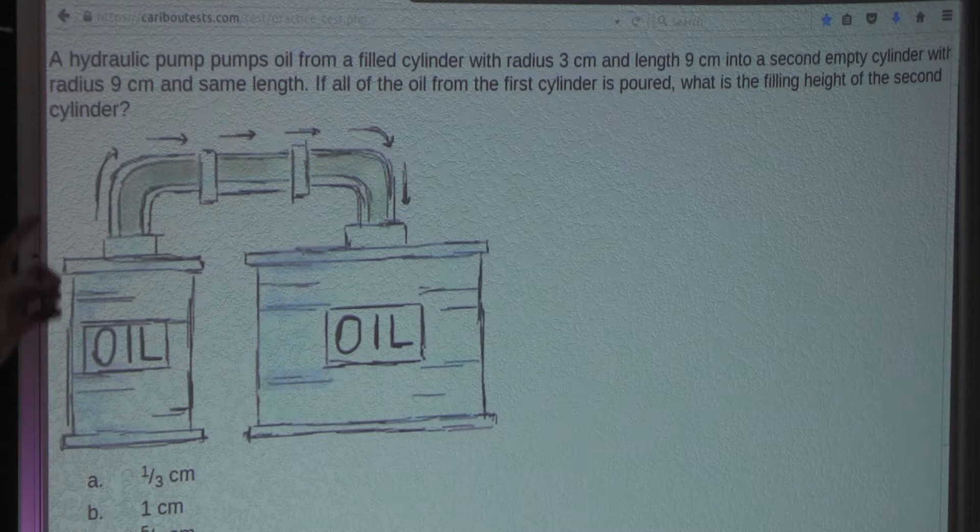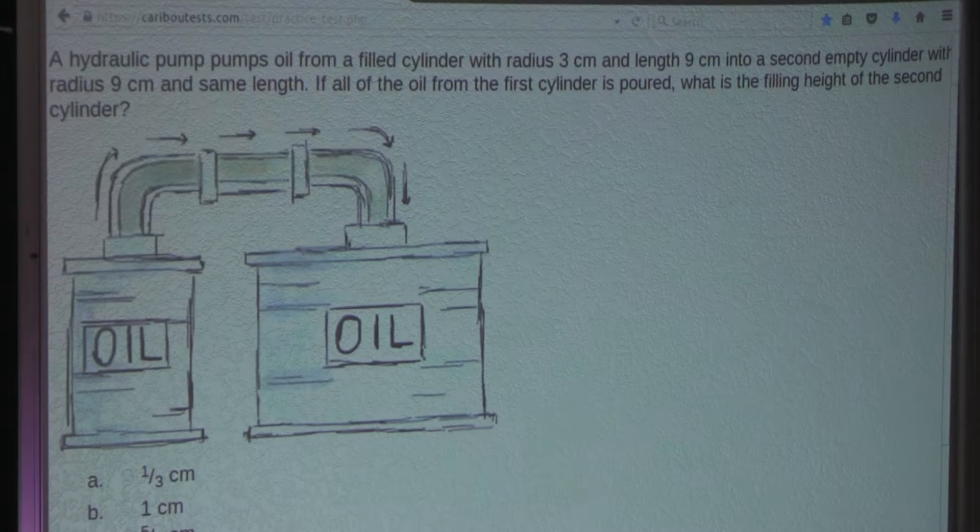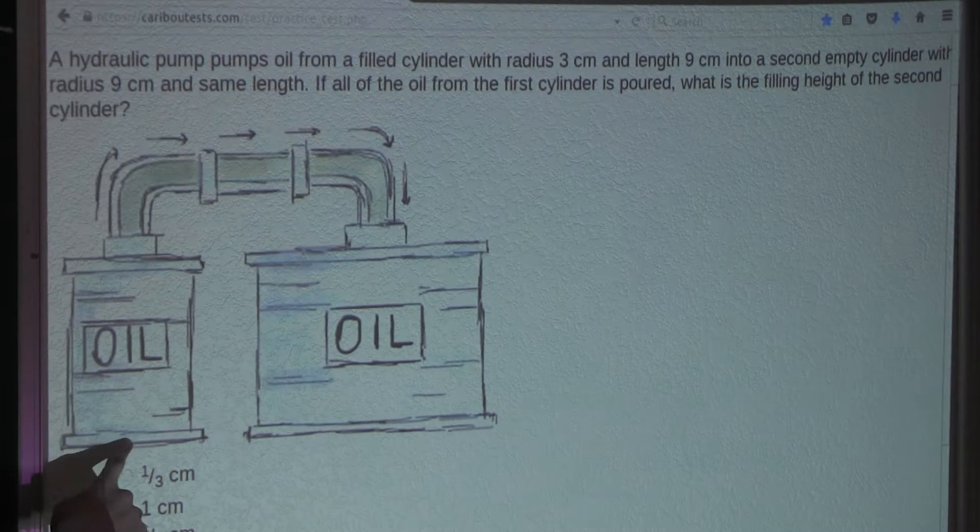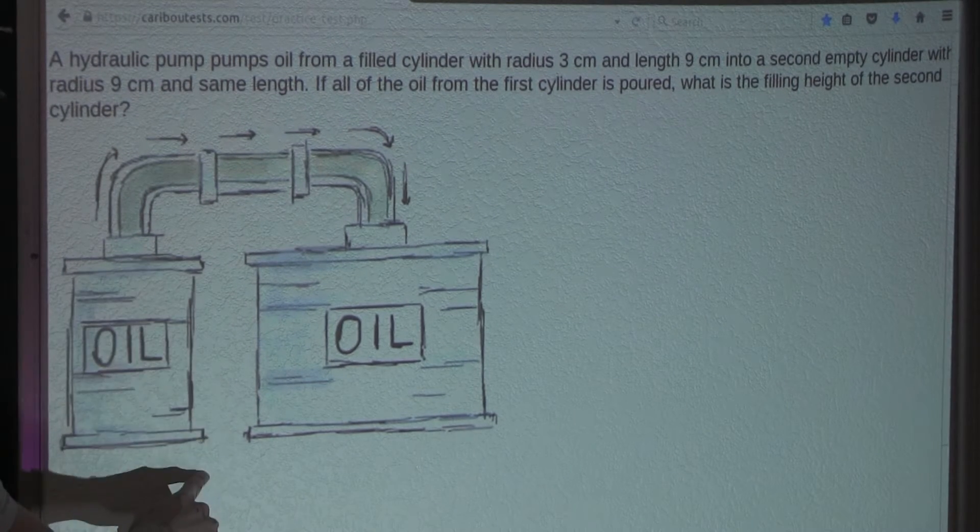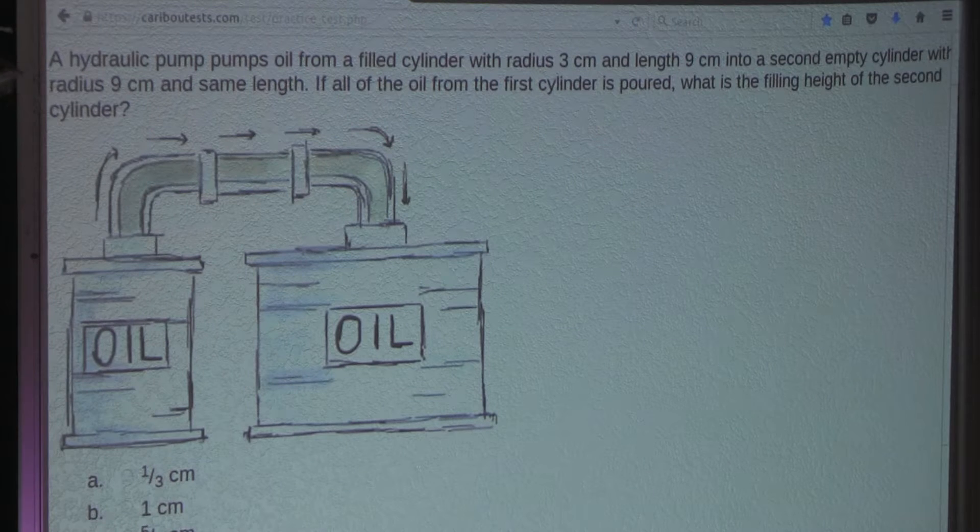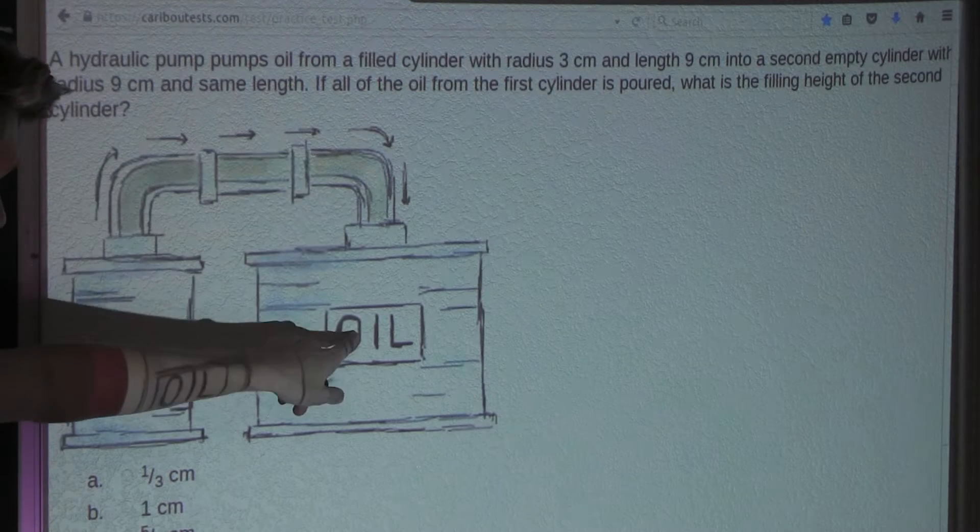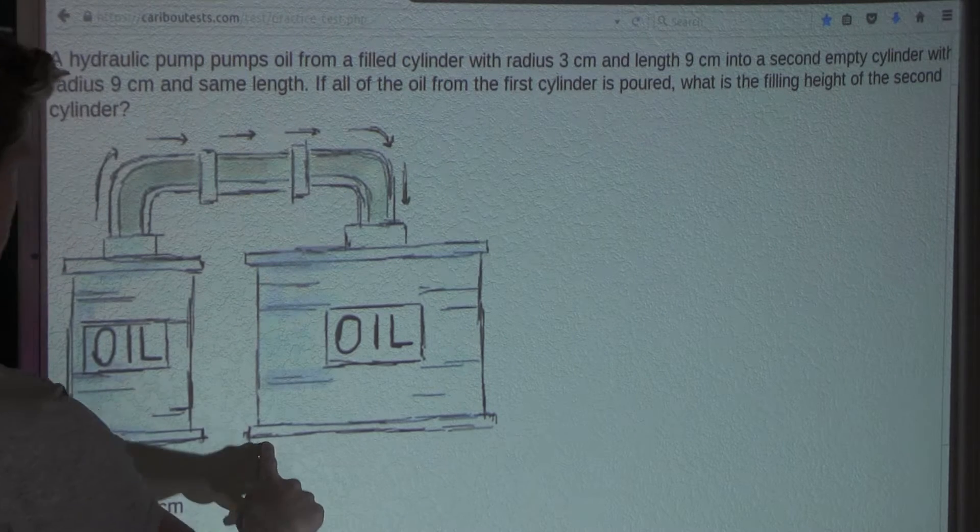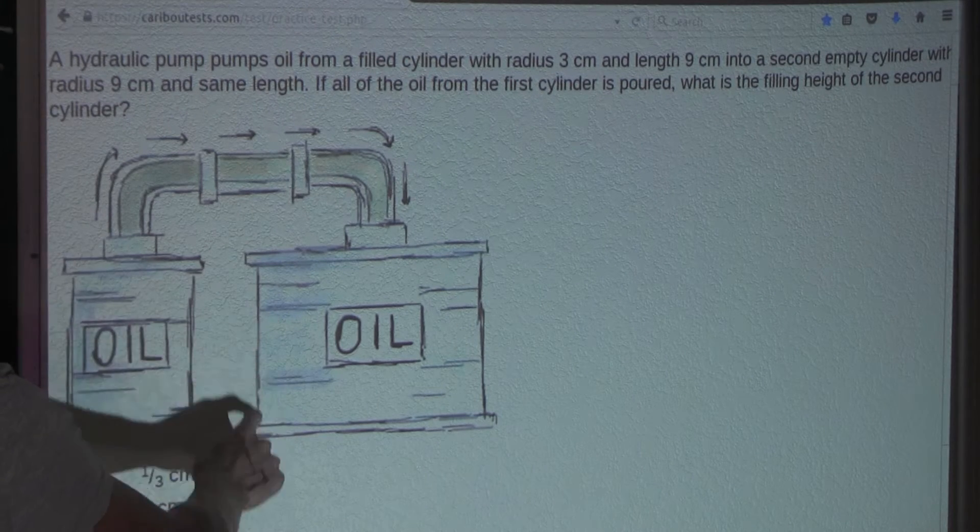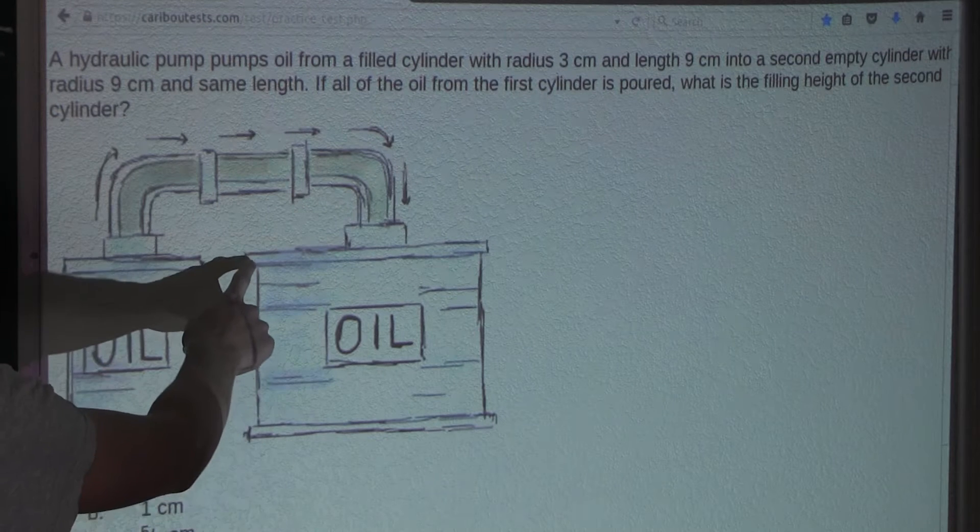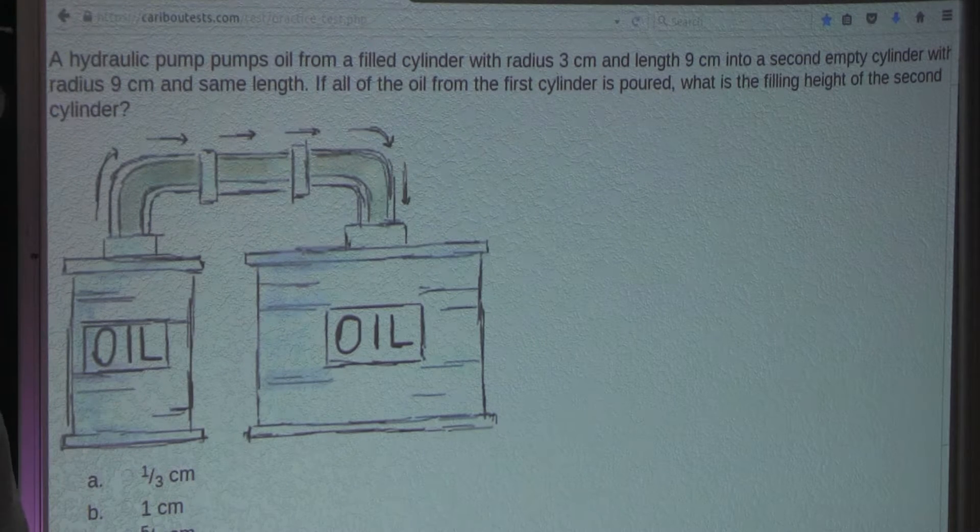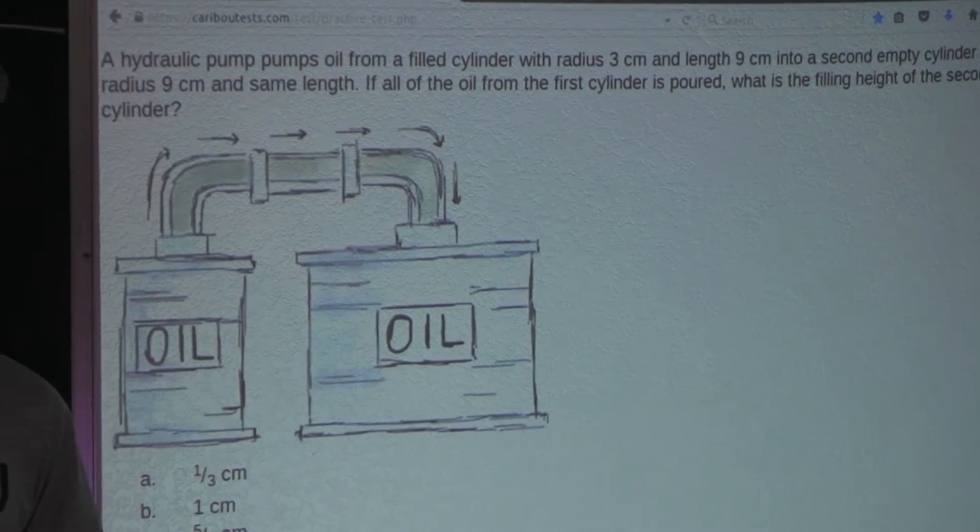Alright, now from the question, we know that the filled cylinder has radius 3cm and length 9cm and then that oil gets pumped into a second cylinder with radius 9cm and the same length of 9cm. Okay, so now we know that we're dealing with the volume of a cylinder.